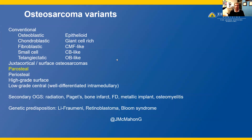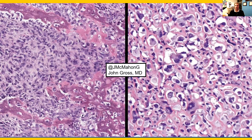Conventional osteosarcoma is the most common subtype of osteosarcoma. Within that, we have osteoblastic osteosarcoma, shown here with these primitive and variably pleomorphic malignant cells directly producing mineralized osteoid matrix — seen on the left at intermediate to high power. And on the right, at even higher power, these pleomorphic and anaplastic cells directly produce this osteoid matrix, which is very fine and lace-like, which is what we need to see in order to make the diagnosis of osteosarcoma.